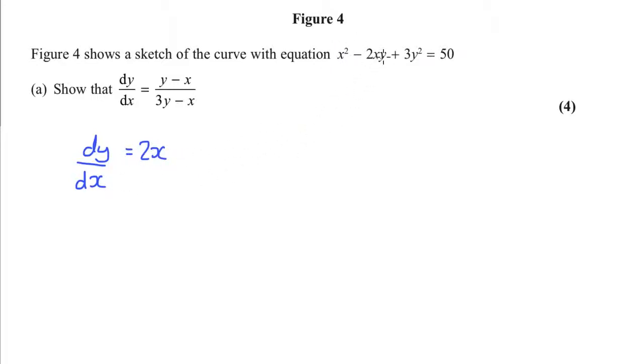I now need to differentiate this product, so I'm going to need to use the product rule. The product rule says differentiate the first one, so that's a 2, leave the second one alone, plus leave the first one alone, and times by the derivative of the second one. When you differentiate y, you get dy by dx, so that's going to be 2x dy by dx.